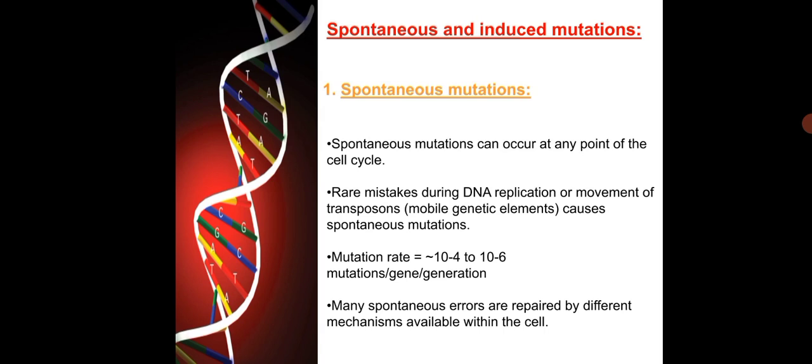Induced mutations are caused mainly by radiations like X-rays or UV rays. Ionizing radiations break covalent bonds including those in DNA, and are one of the leading causes of chromosomal mutations. UV radiation causes purines and pyrimidines to form abnormal thymine bonds and bulges in the DNA strand.